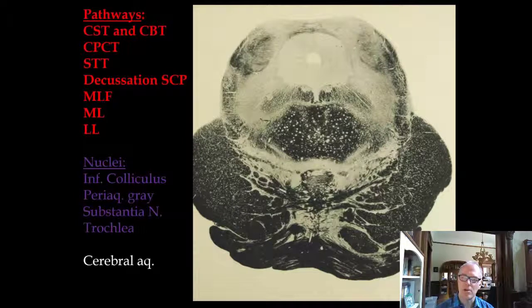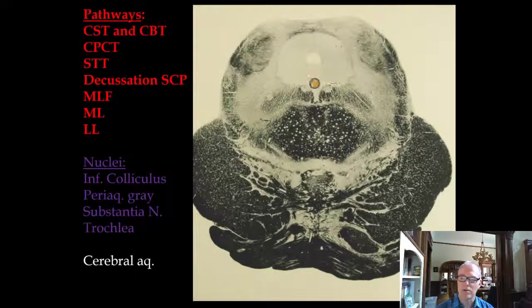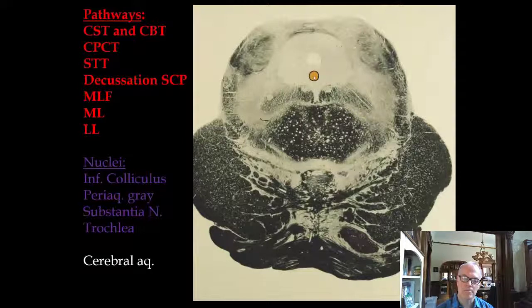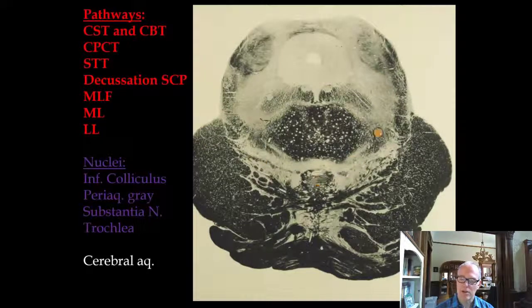Other structures visible here include the inferior colliculus and the cerebral aqueduct, around which we have the periaqueductal gray. The periaqueductal gray is loaded with opioid receptors, and we'll describe it as an important part of descending pain pathways when we talk about pain later. There are also a bunch of nuclei in this region representing the substantia nigra.